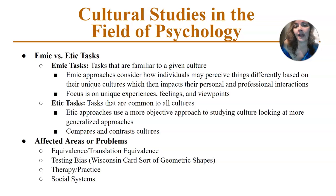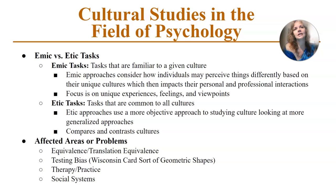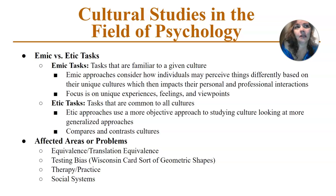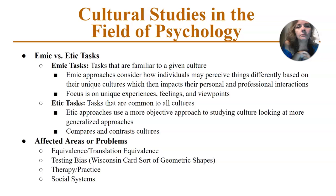There's also testing bias. Piaget is a great example. His cognitive development theory is incredible, universal, and well supported by research — however, it's biased. The way he tests whether someone has achieved abstract reasoning, deductive reasoning, and scientific problem solving uses weights and different-sized strings on a pendulum, which is a very foreign concept in some cultures. Of course, those individuals won't engage with those materials in the same way.